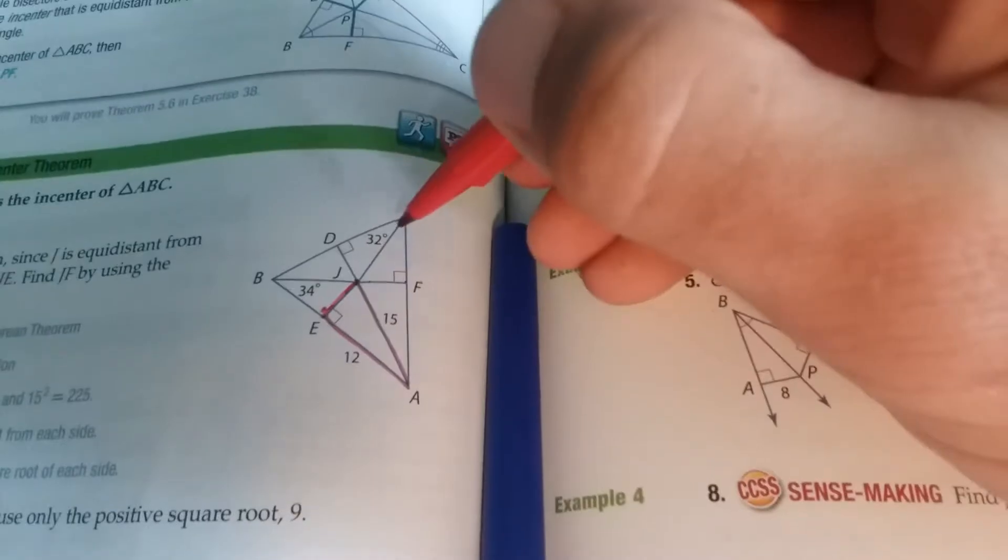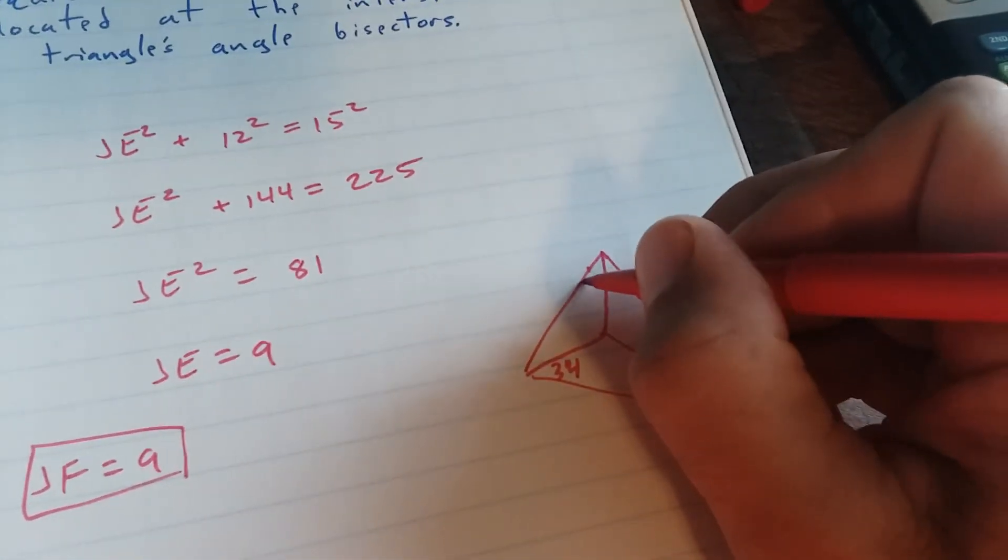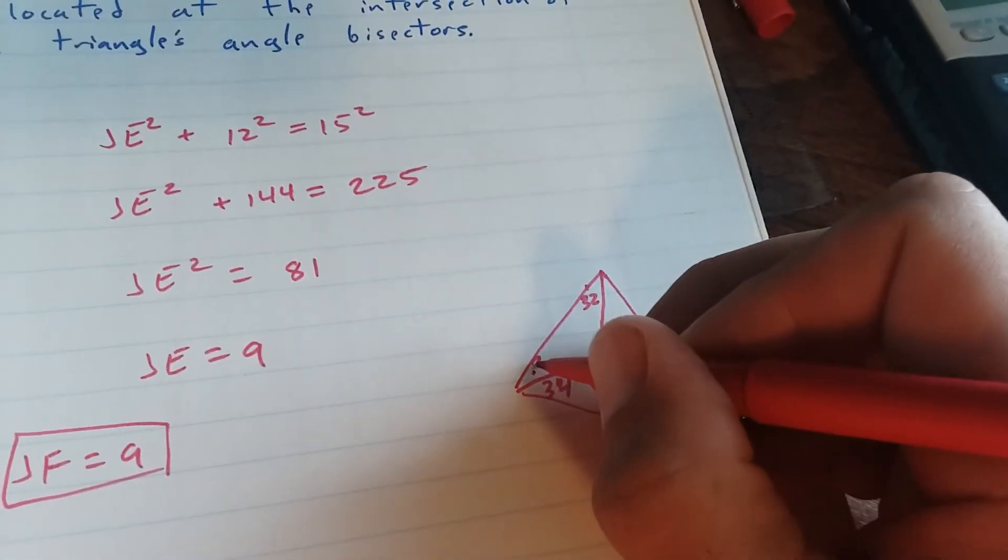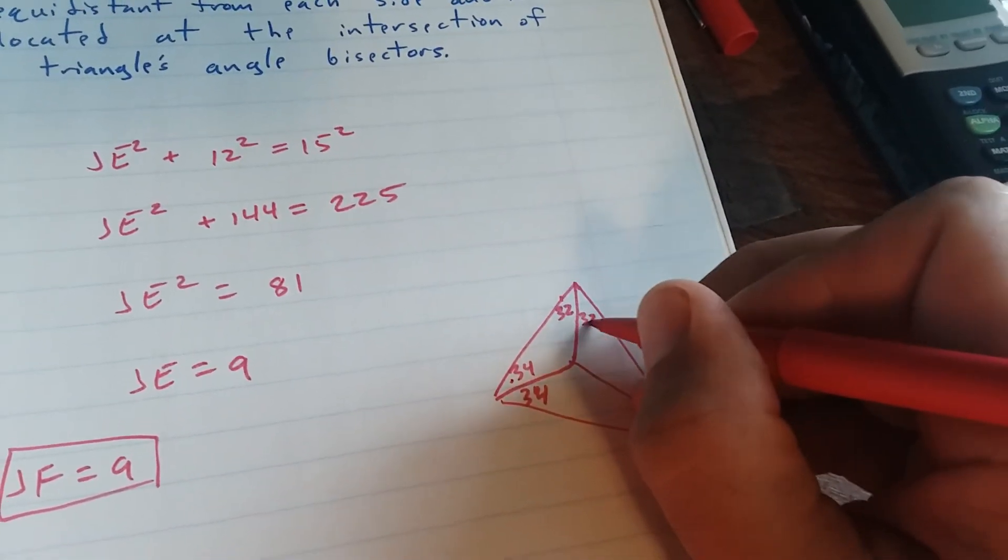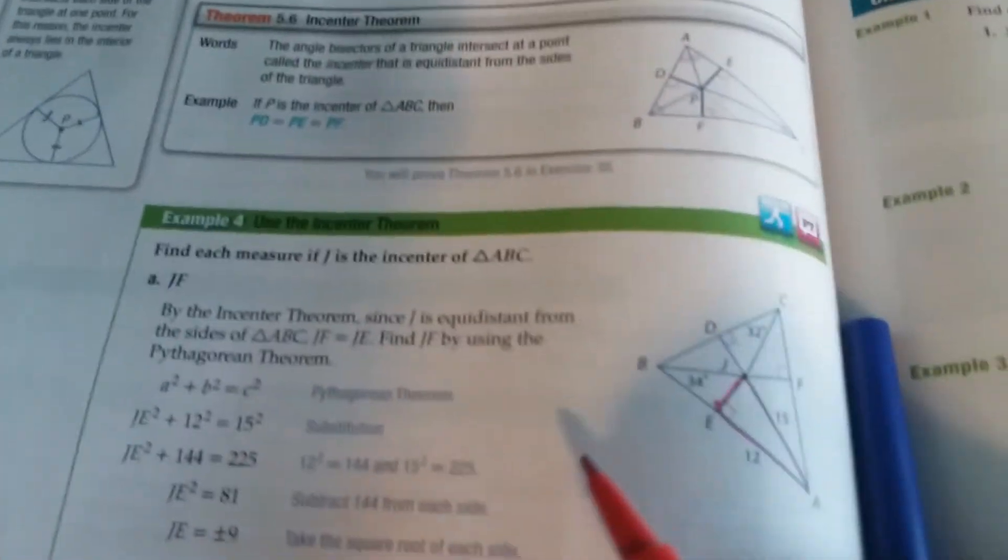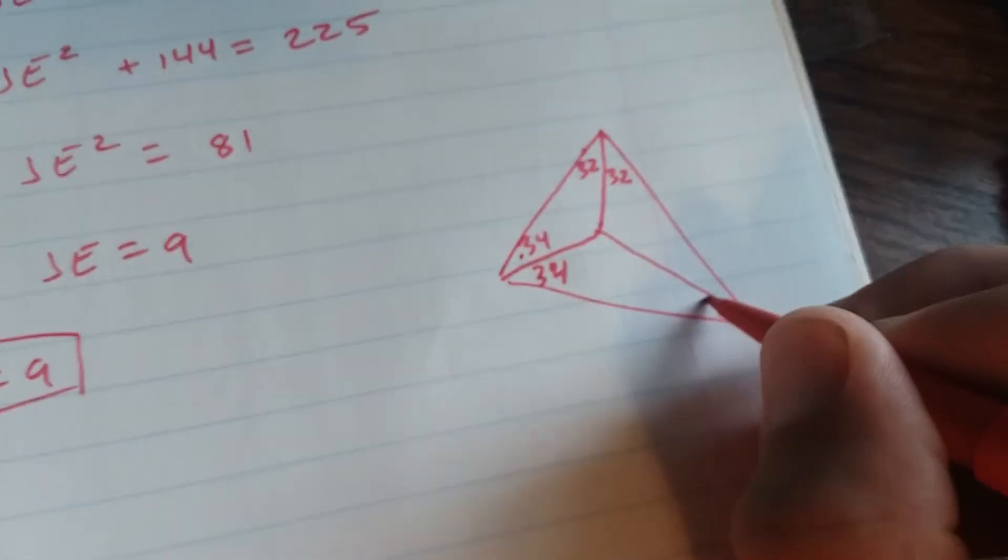We've got 34, 32. While this angle and this angle match, so this is 34, this is 32, and we're trying to find JAC, which is, we're trying to find the measure of this angle.